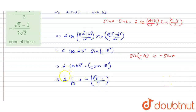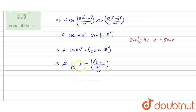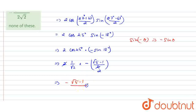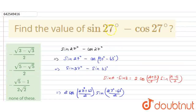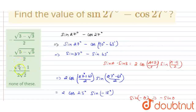So this is the value we get here. Now I am going to cancel this 2 and 2. Therefore the value is minus root 5 minus 1 divided by 2, and root 2 is there, so root 5 minus 1 divided by 2 root 2. This is the answer for our question: sin 27 degree minus cos 27 degree equals minus (root 5 minus 1) divided by 2 root 2. So option C is the correct answer. Thank you.